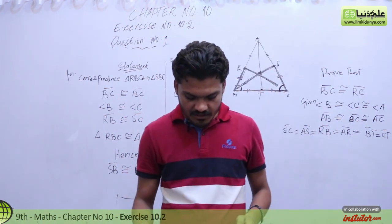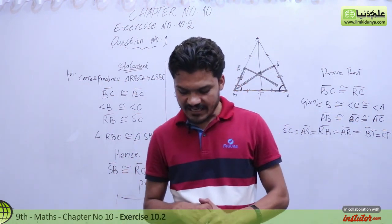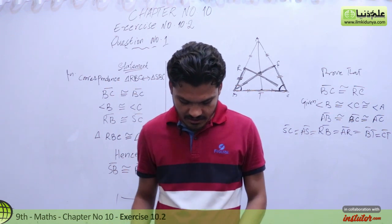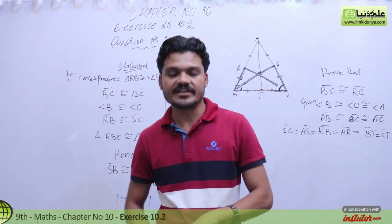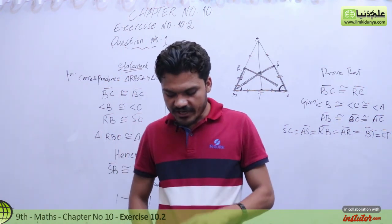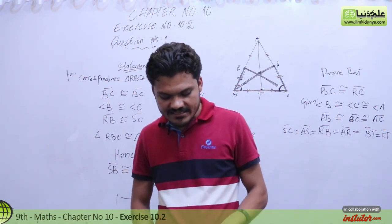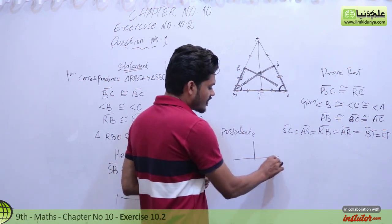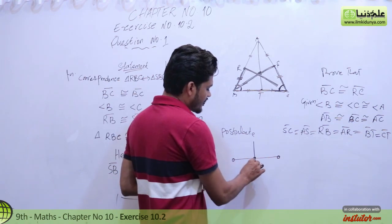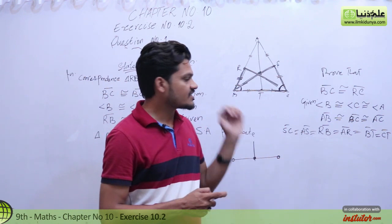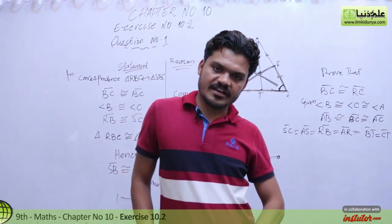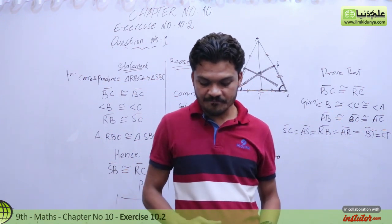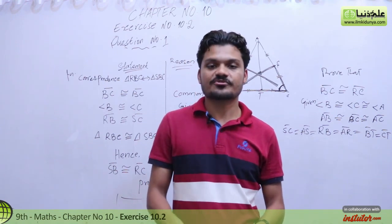Question number two: prove that a point which is equidistant from the endpoints of a line segment lies on the right bisector of that line segment. Try to solve this yourself. If you have any problem, we will solve it together. Next class we will do exercise 10.3 and 10.4. Thank you very much.